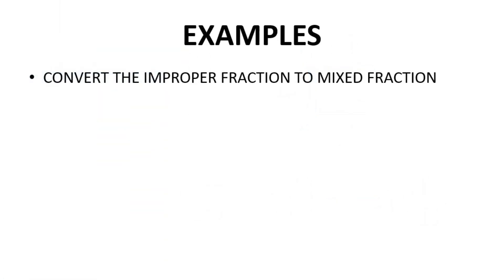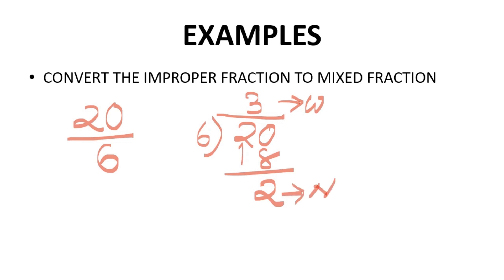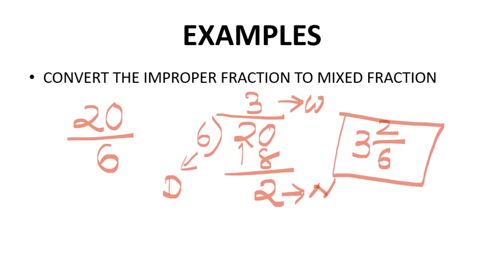Let us take one example. Improper means the numerator is greater than the denominator: 20 upon 6. Let us divide 20 by 6. 6 goes into 18, giving quotient 3 and remainder 2. The whole part is 3, the numerator part is 2, and the denominator part is 6. So we write 3 whole 2 upon 6. This is the mixed fraction form.